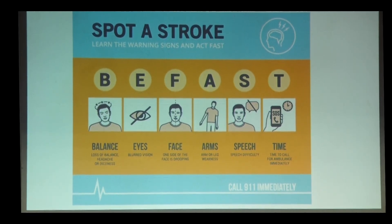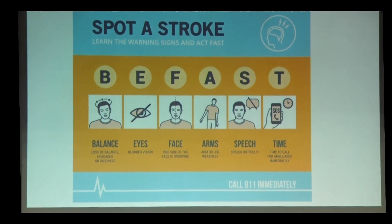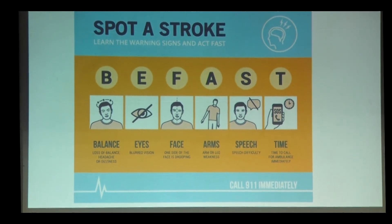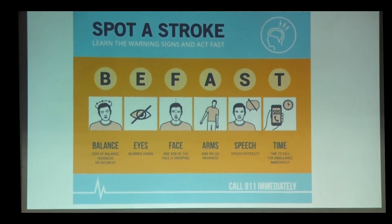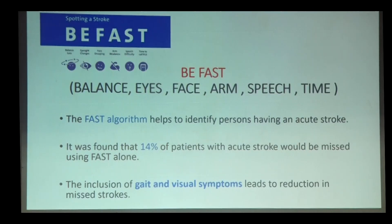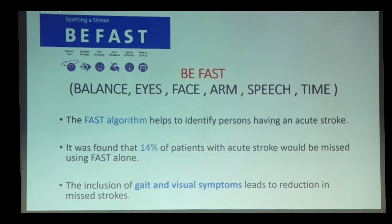The recent update is that it has become BE-FAST. B for balance — whether the patient is having giddiness — and E for eye, that is whether the patient is having any blurring of vision. It was found that 40% of patients with acute stroke would be missed using FAST alone. The inclusion of gait and visual symptoms leads to a reduction in missed strokes.